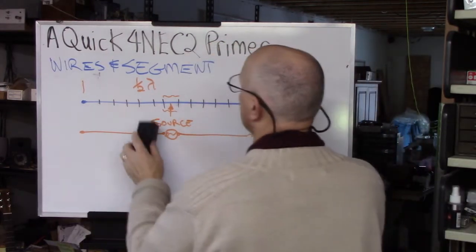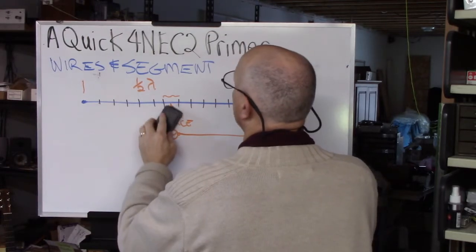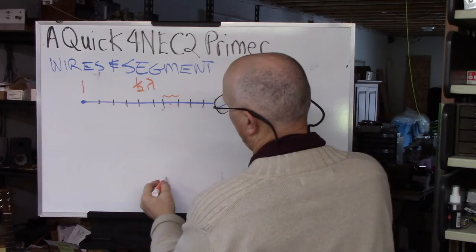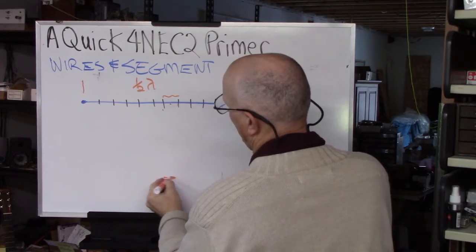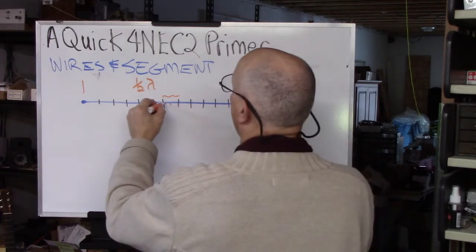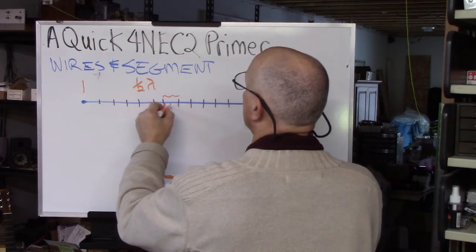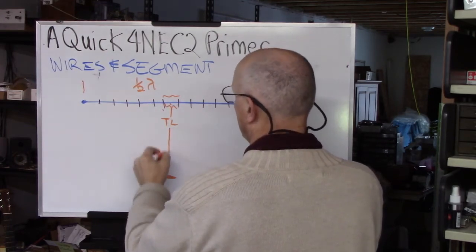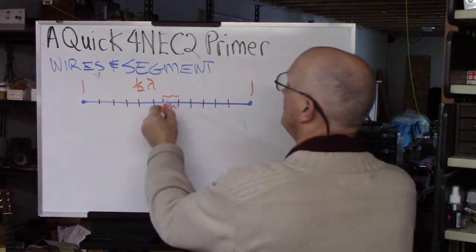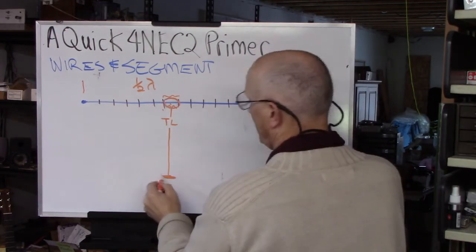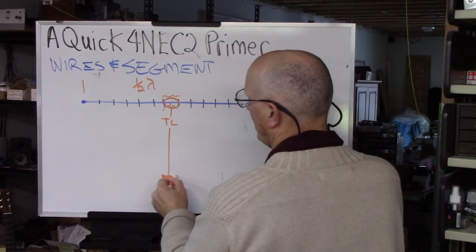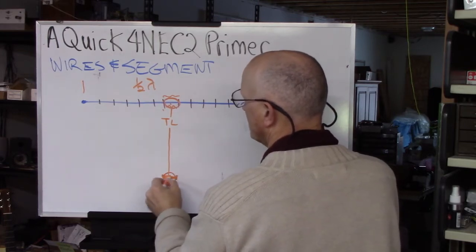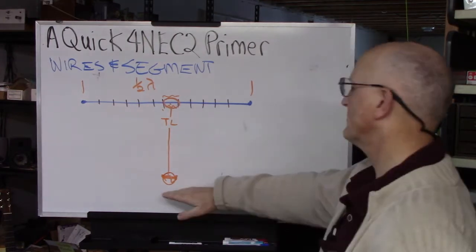You can also do this, put a, have a single segment wire down here, and you can insert transmission line between two, this segment here, and this single segment wire you have down here, and then you insert the source here. Now you have a source down here,